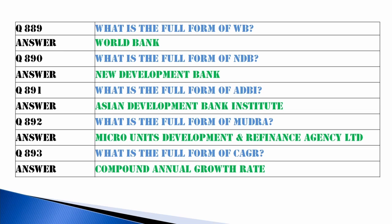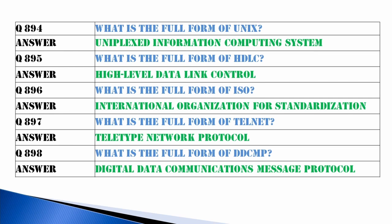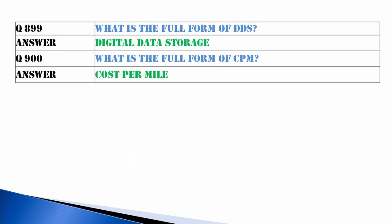What is CAGR? Compound Annual Growth Rate. What is UNIFLEX? Information Computing System. What is HDLC? High-Level Data Link Control. What is ISO? International Organization for Standardization. What is Telnet? Teletype Network Protocol. What is DDCMP? Digital Data Communication Message Protocol. What is DDS? Digital Data Storage. What is CPM? Cost Per Mile.